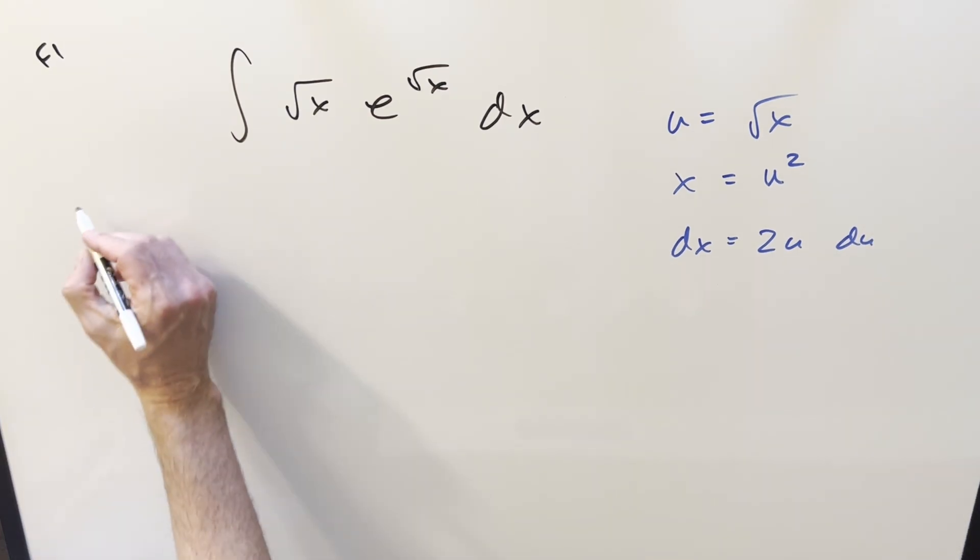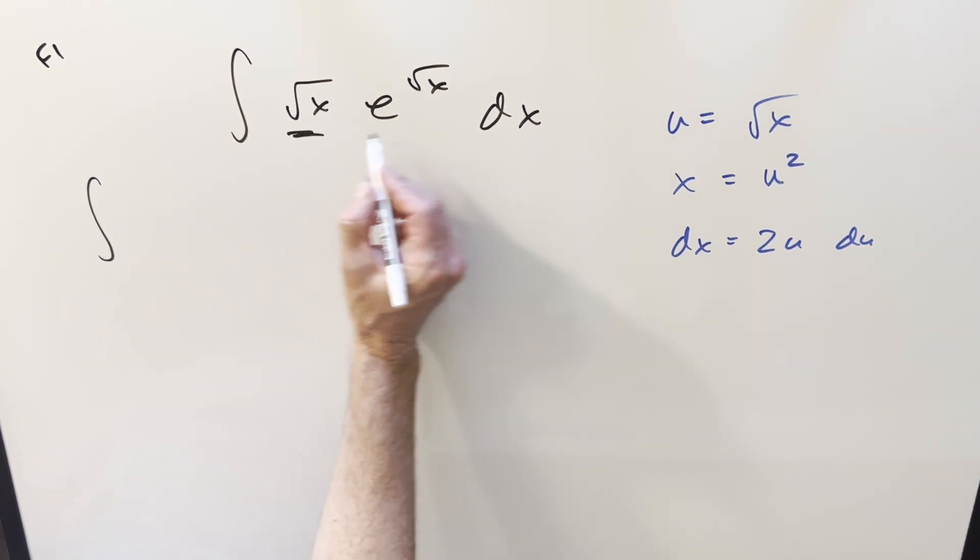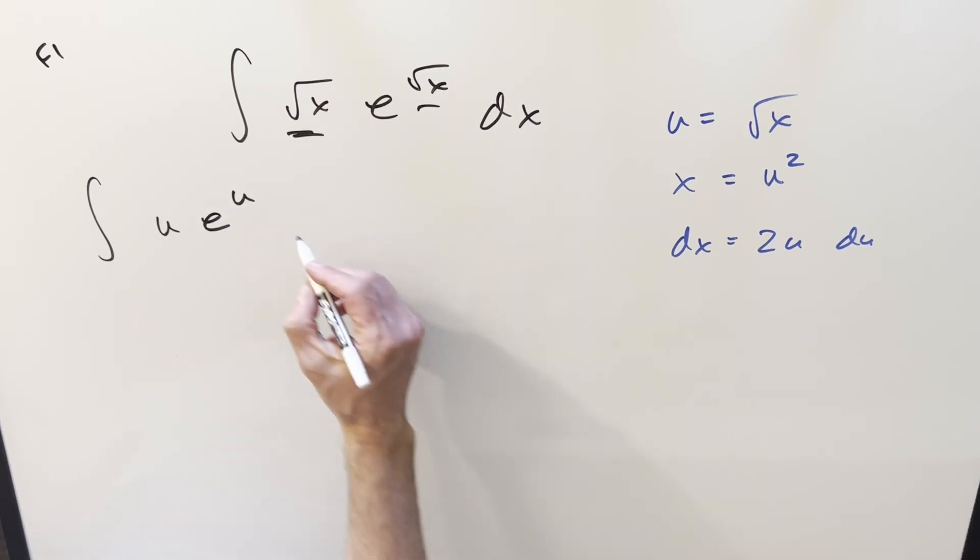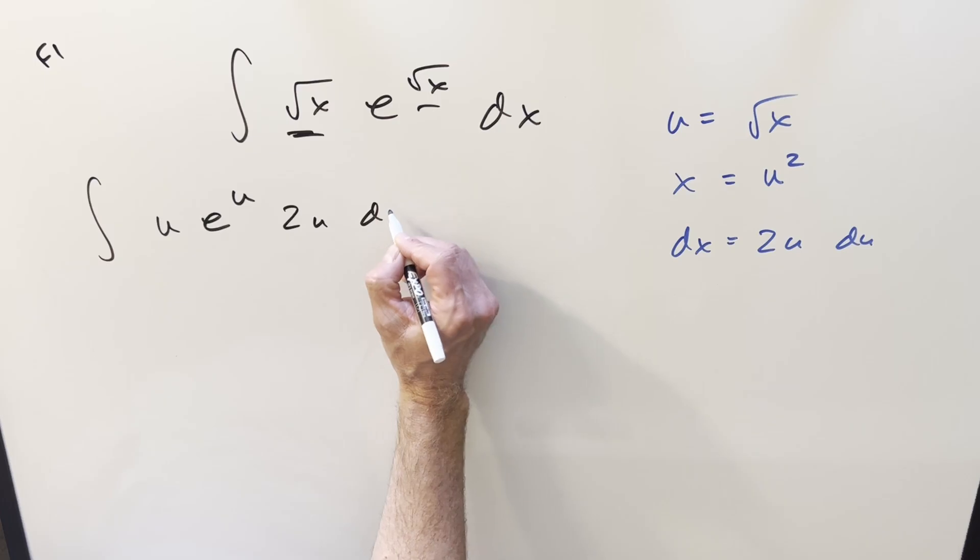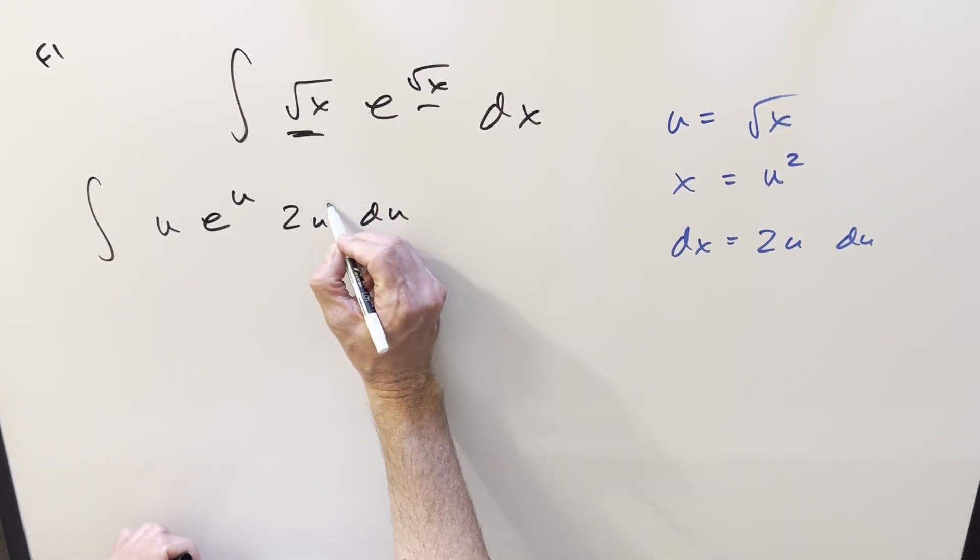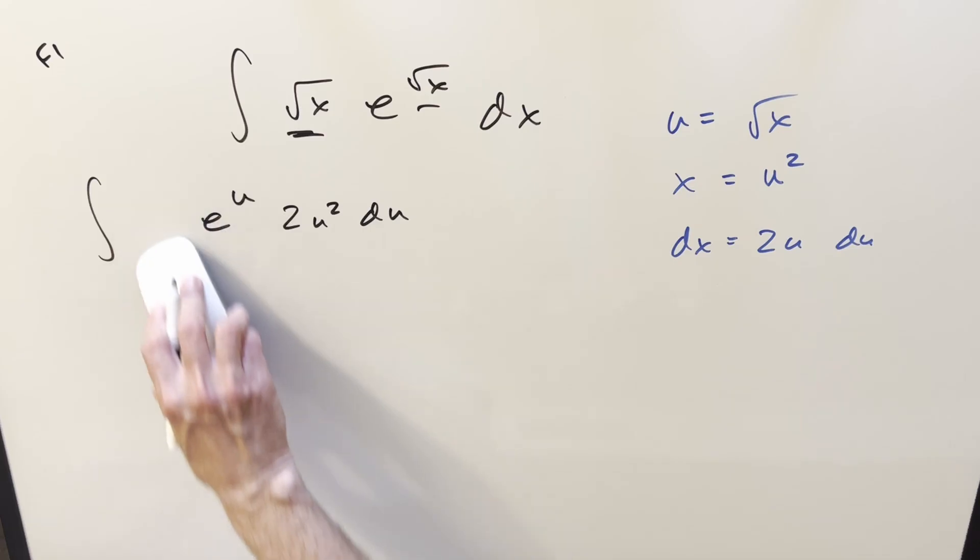So then let's go and substitute here. So we've got u here and here. So it's going to be u, e to the u, and then dx is going to be 2u du. Well, let's combine the u's here and make this a u squared and get rid of this thing here. And then with what we have here, this is in good shape for integration by parts.